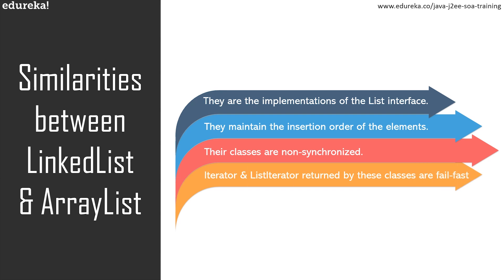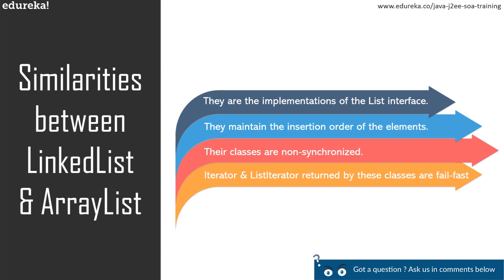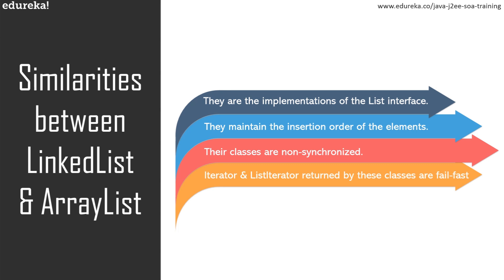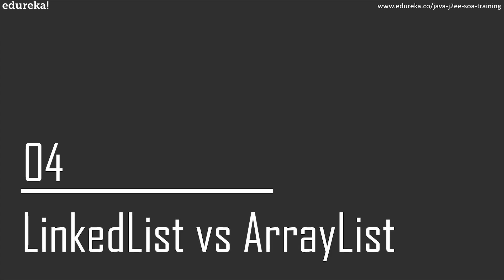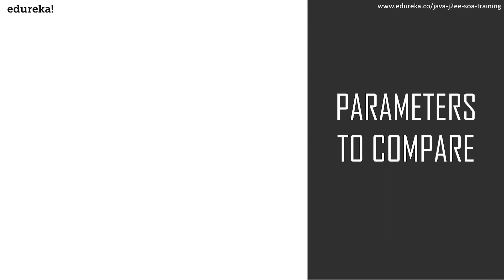The iterator and list iterator returned by these classes are fail-fast. What is fail-fast? As the name suggests, if the list is structurally modified at any time after the iterator is created — except through the iterator's own remove or add method — the iterator will throw a ConcurrentModificationException. These are the major similarities between linked list and ArrayList.